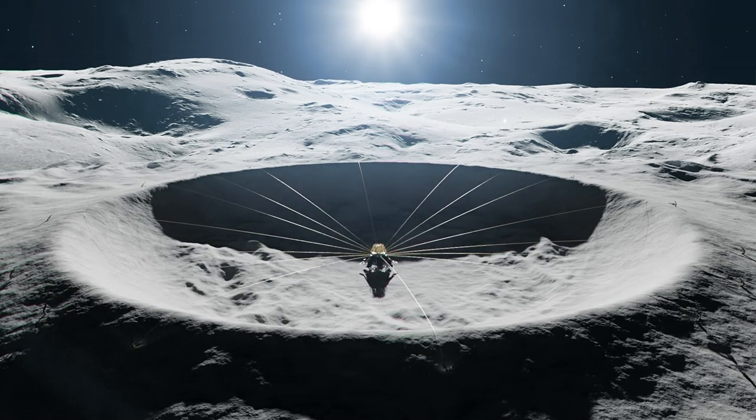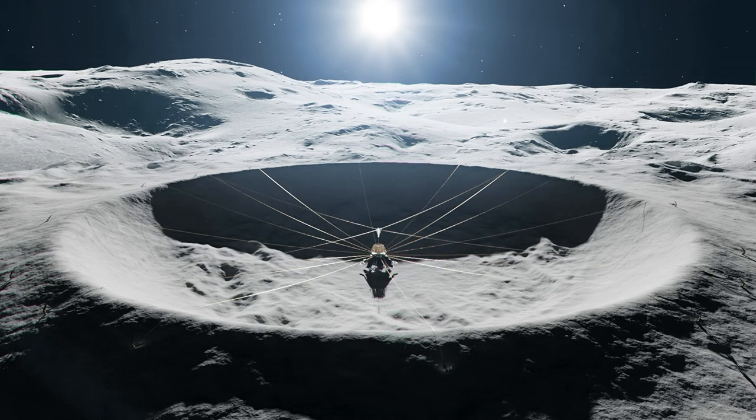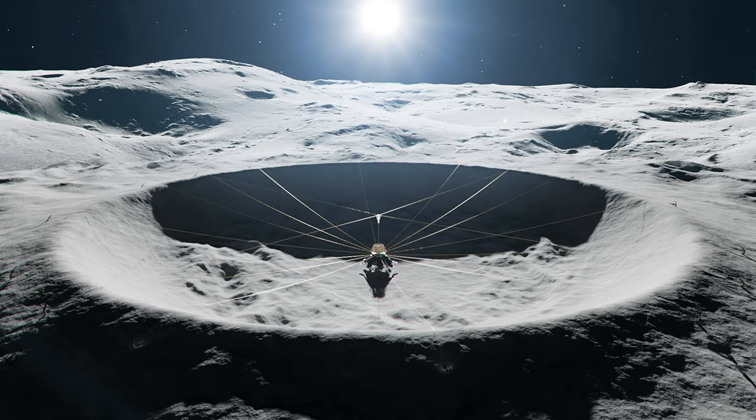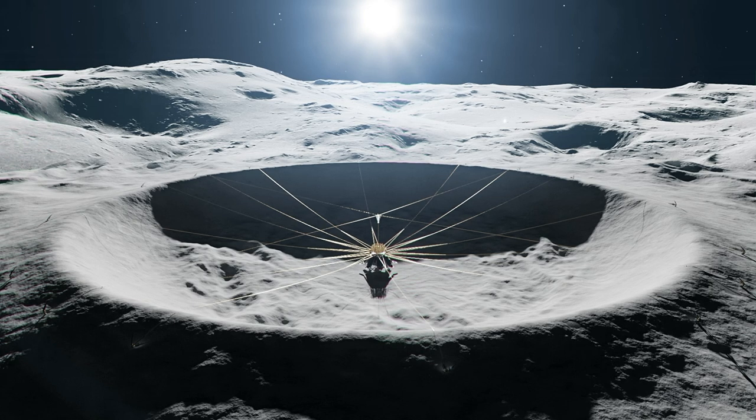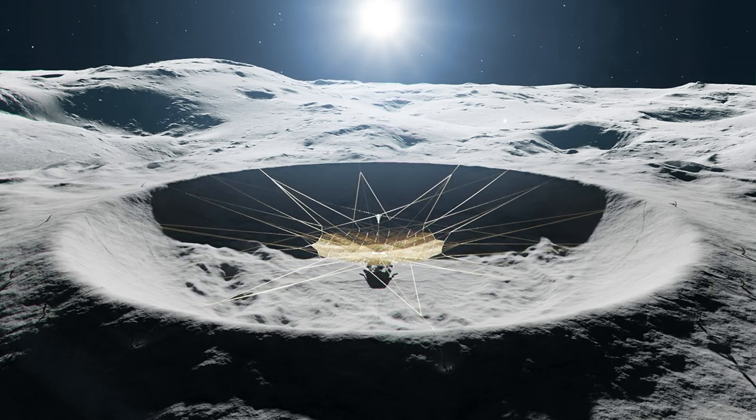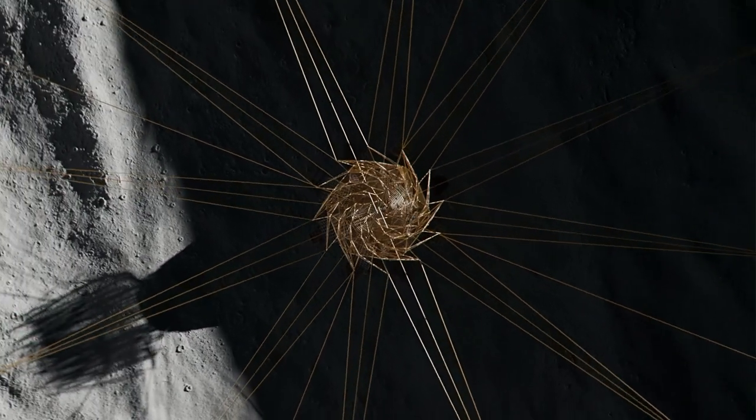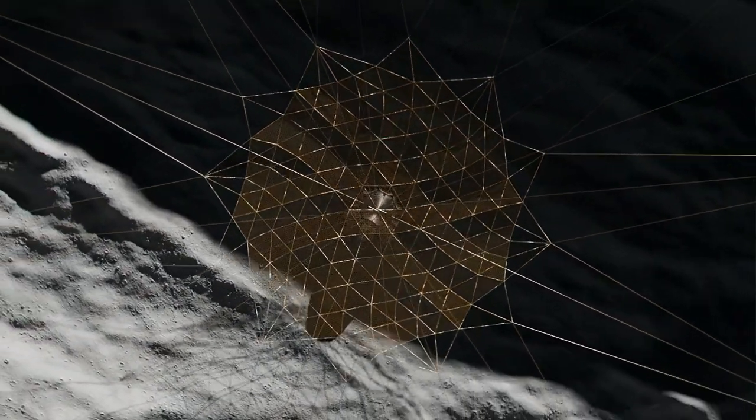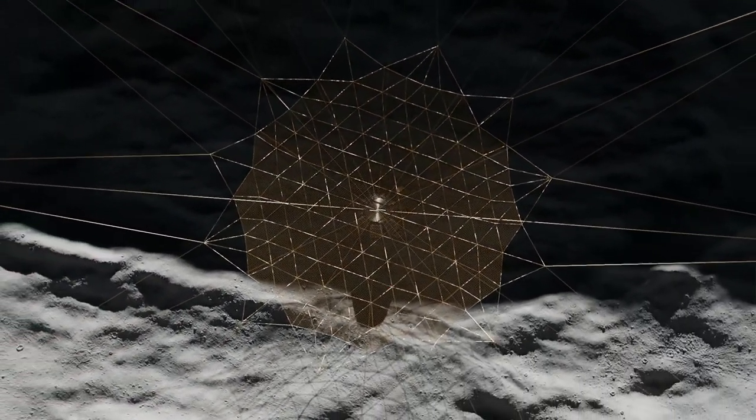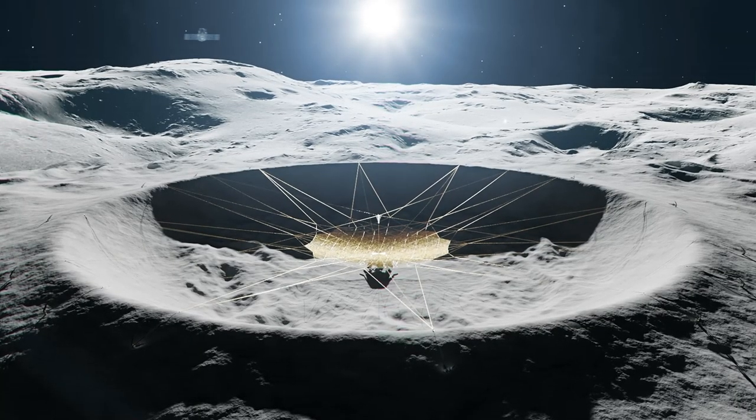We first tension the lift wires. Then we deploy the feed antenna. Next, we deploy the reflector. Finally, we calibrate LCRT using a beacon spacecraft. These CONOP steps will be discussed in the following slides.